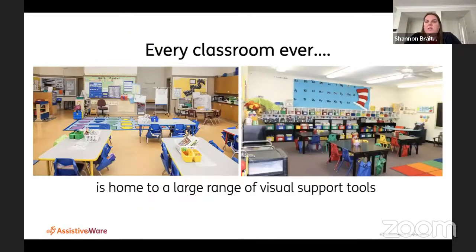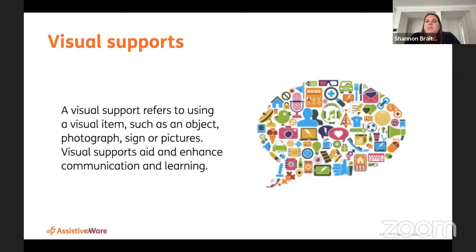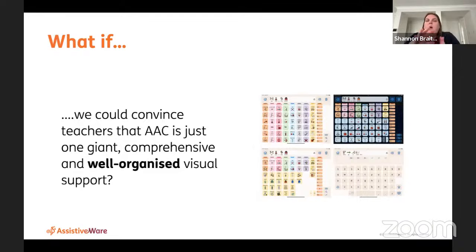When we talk about AAC being universal, every classroom I've been in already has a large range of visual tools. For morning circle there are symbols for feelings and weather; book boxes show kids where to put their maths or English book; there are symbols for shapes in maths centres. When we talk about visual supports — objects, photos, signs, pictures — any visual that aids communication and learning is already there. What if we could convince teachers that all those visuals they're already using are already inside the AAC system?